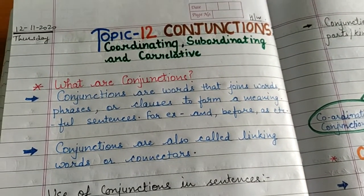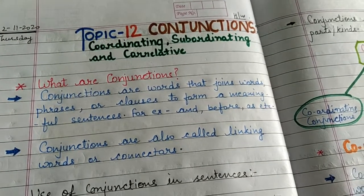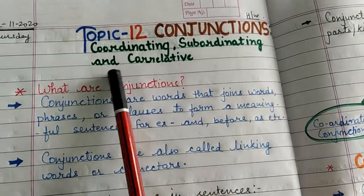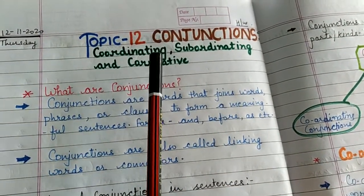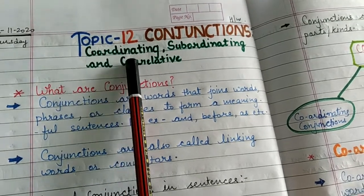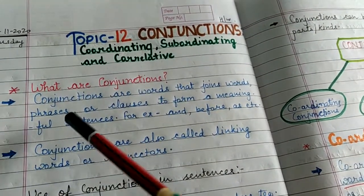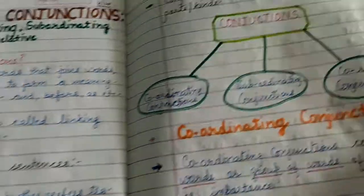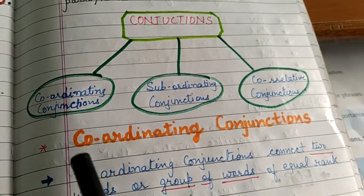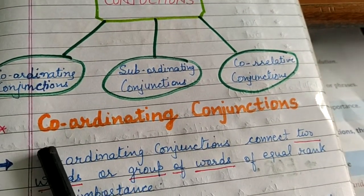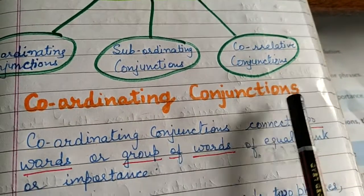Good morning dear children, I welcome you all once again in our English class. In the previous class we started a new topic of our English grammar — topic number 12, conjunctions. I told you that under this topic we are going to learn about coordinating, subordinating, and correlative conjunctions. We understood what conjunctions are and the three types. Among the three types, I gave an introduction of coordinating conjunctions.